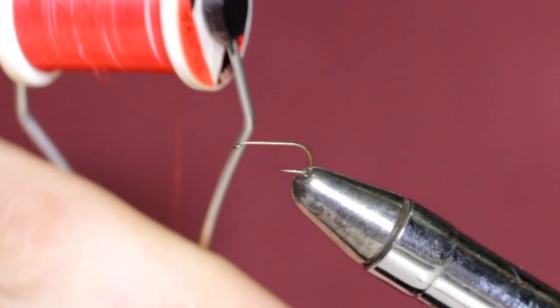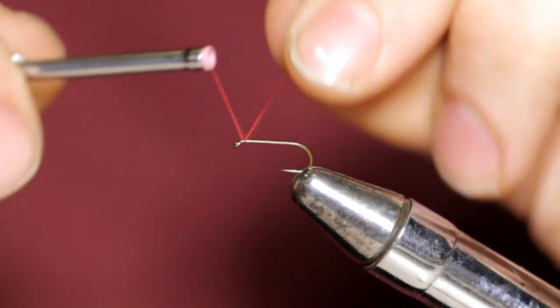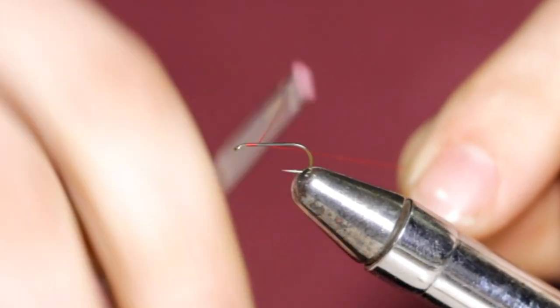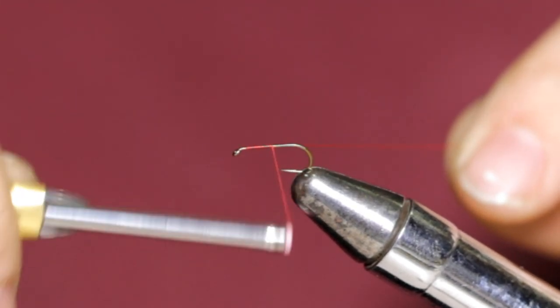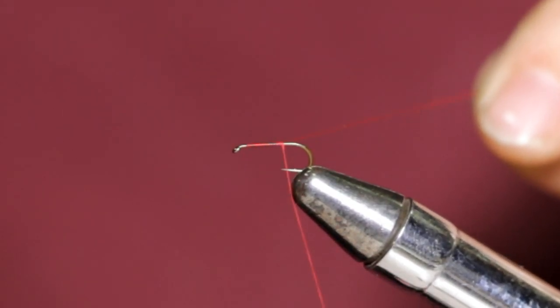I've got some 70 denier UTC thread in red. I'm going to start this at the front of the hook, leaving about a hook eye length space so that I don't crowd the hook eye. I'm just going to wrap this down in fairly even turns, stopping at the barb of the hook. Snip off this tag.